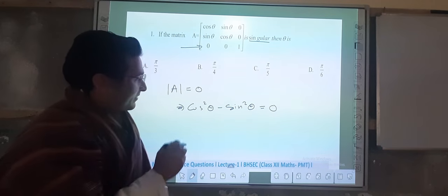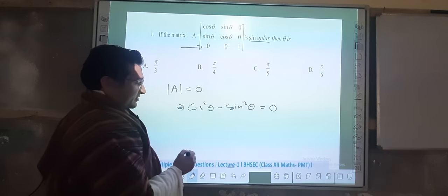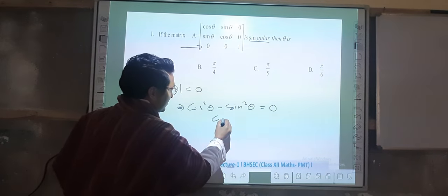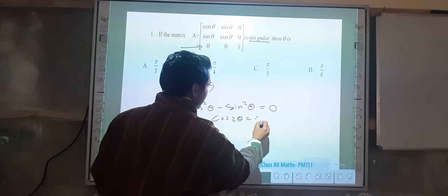Now cos squared theta minus sine squared theta by using the trigonometry property is cos two theta, which is equal to zero.